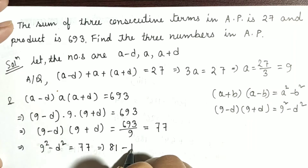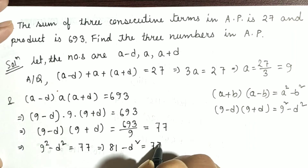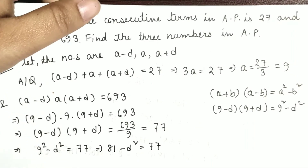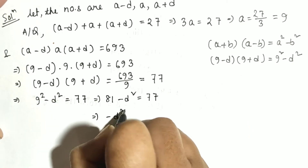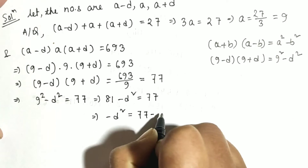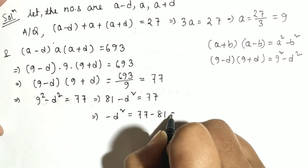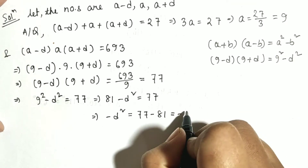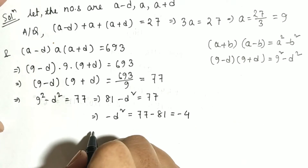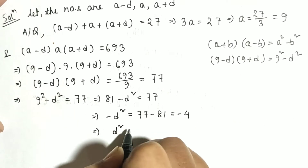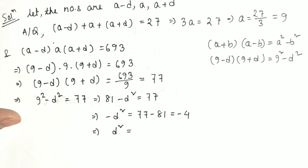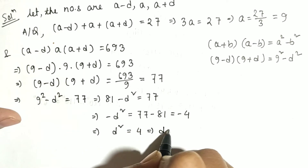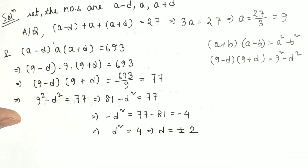9 square is 81, so 81 minus D square equal to 77. Rearranging, minus D square equals 77 minus 81, which gives minus 4. Both sides have a minus sign, so minus sign is removed: D square equal to 4, that means D is equal to plus minus 2.